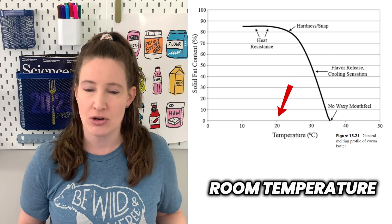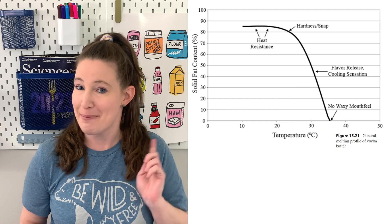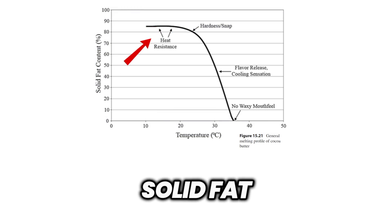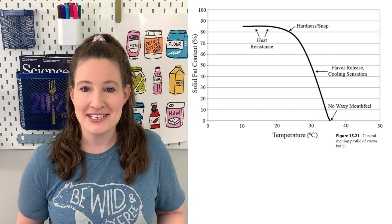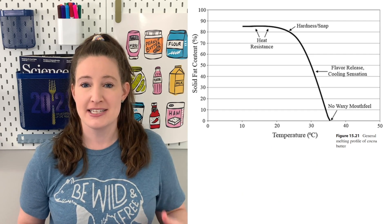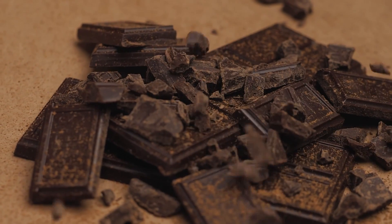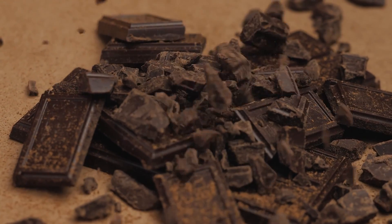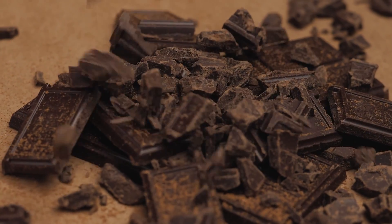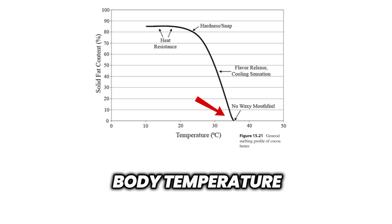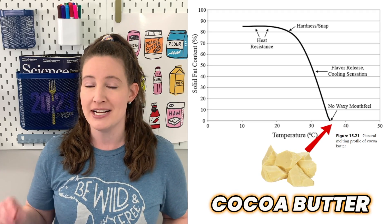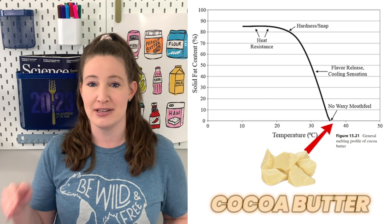At room temperature — about 20 degrees Celsius or 68 degrees Fahrenheit — if we look at this graph, chocolate is mostly solid fat. SFC stands for solid fat content. At 20 degrees Celsius, cocoa butter is 80% solid fat, which is why it acts like a solid bar in the store or at home. But when we put chocolate in our mouth, our body temperature is much warmer — about 37 degrees Celsius or 98 degrees Fahrenheit. Looking back at the graph, the solid fat content of cocoa butter is now zero, which means it's entirely melted in our mouth.